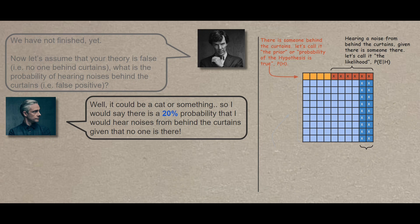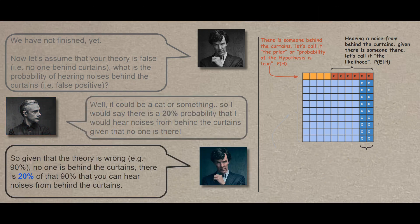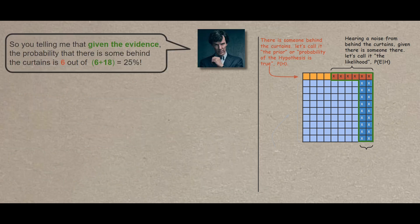If the blue shades is the 90% representing the theory is wrong, the 18 white X's are the 20% that illustrate that we hear noise given that the theory is wrong. Then Sherlock continues. So given that the theory is wrong, no one behind the curtains, there is 20% of that 90% that you can hear noises from behind the curtains.